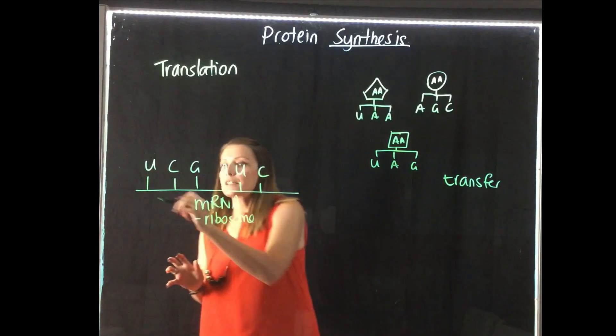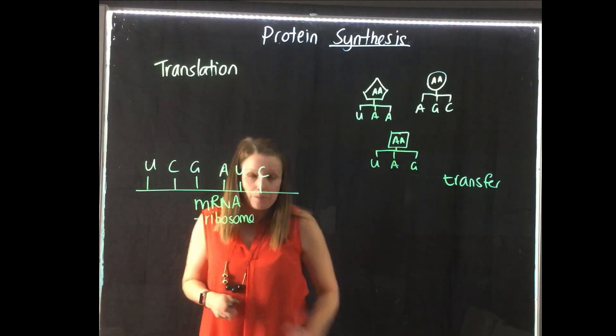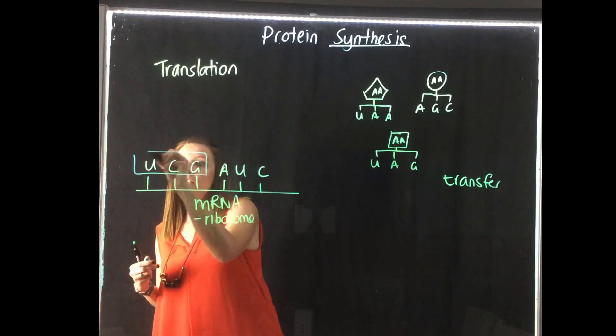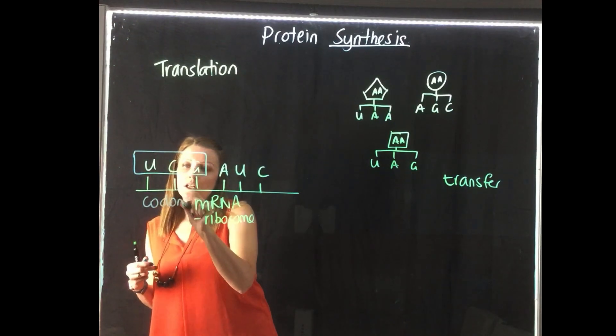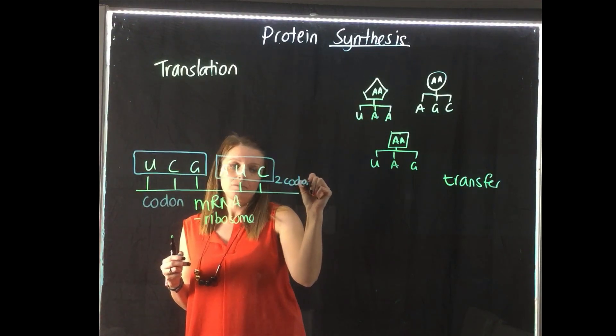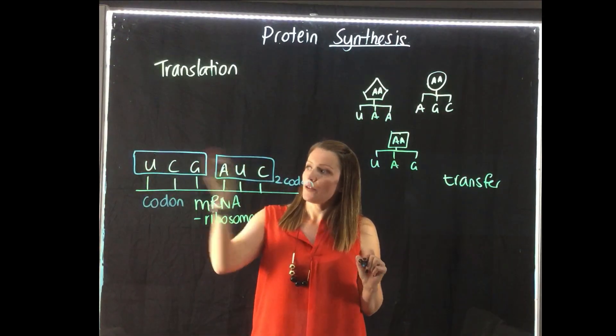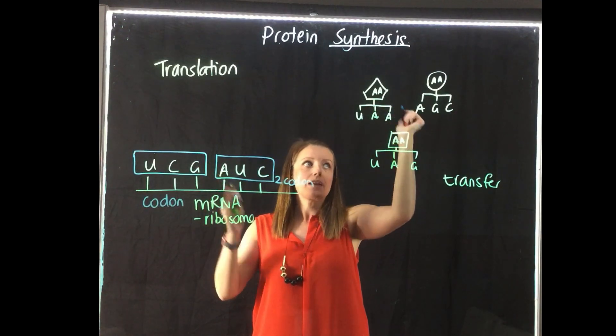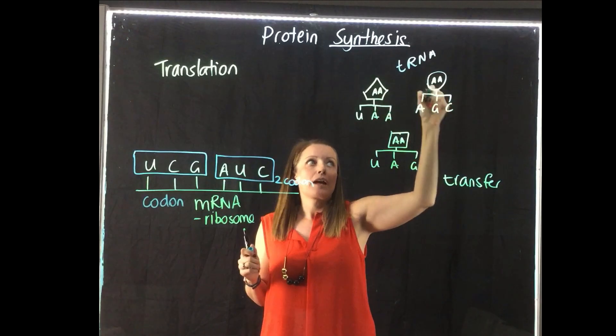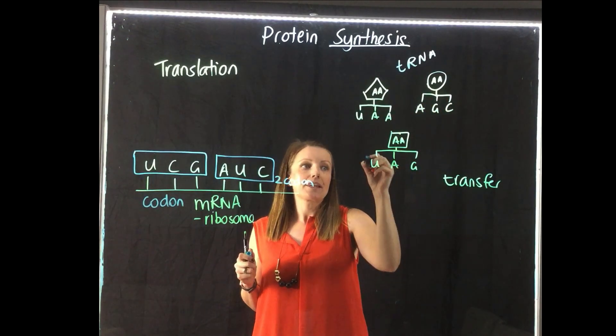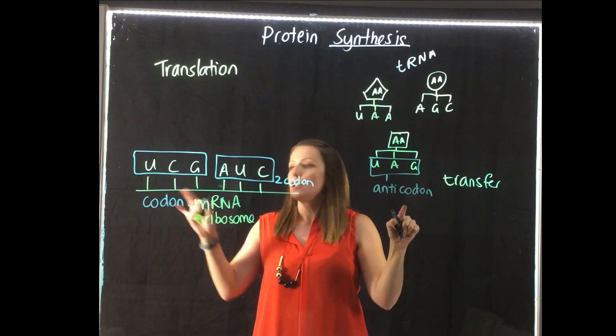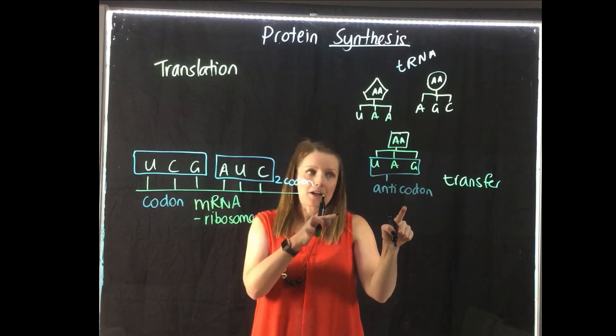So what happens here is the mRNA gets broken up into sections of three bases. So we have one section here, and these are called codons. So this will be one codon, and this will be a second codon. And this acts as the template that matches with our tRNA. So all these up here are tRNA floating around with the amino acid attached, and we call these the anticodon, because they are the opposite to the codons on the mRNA strand.